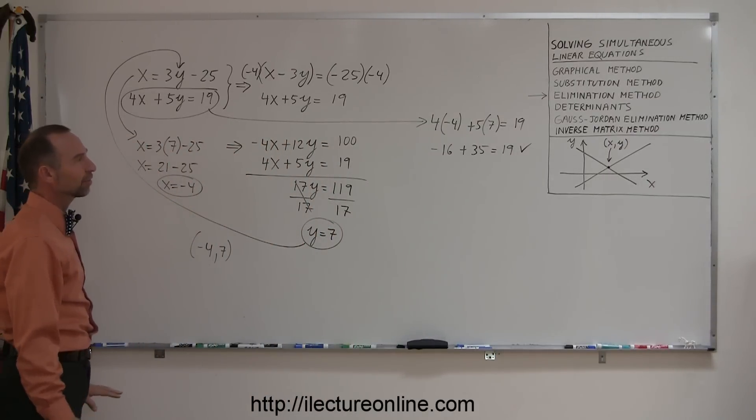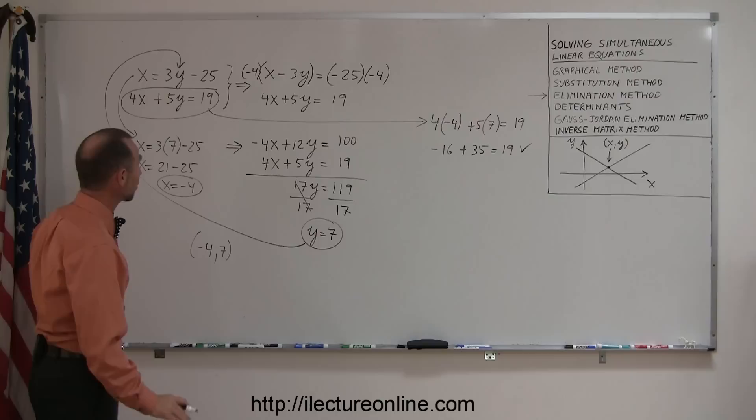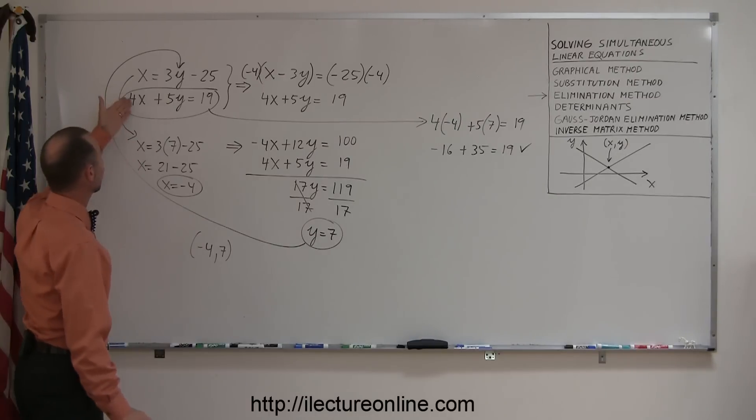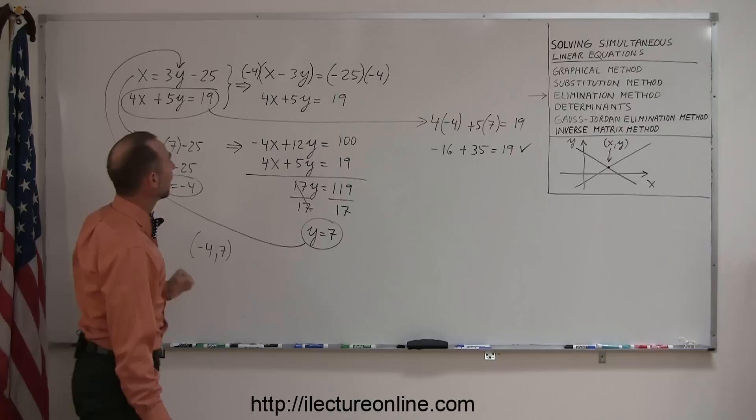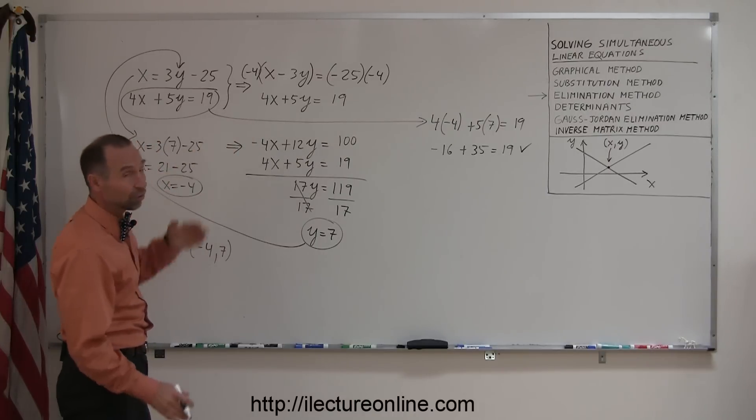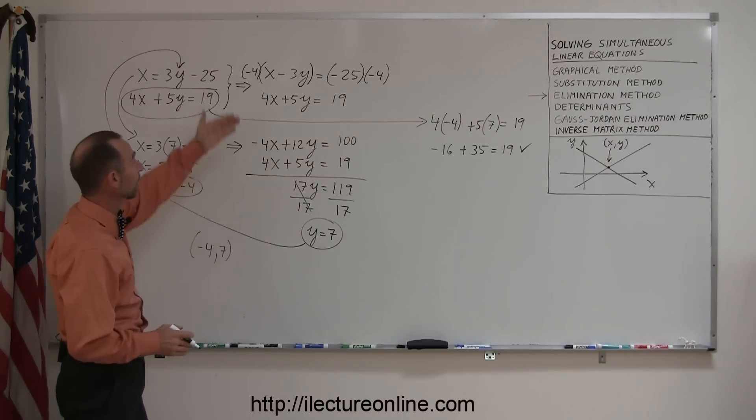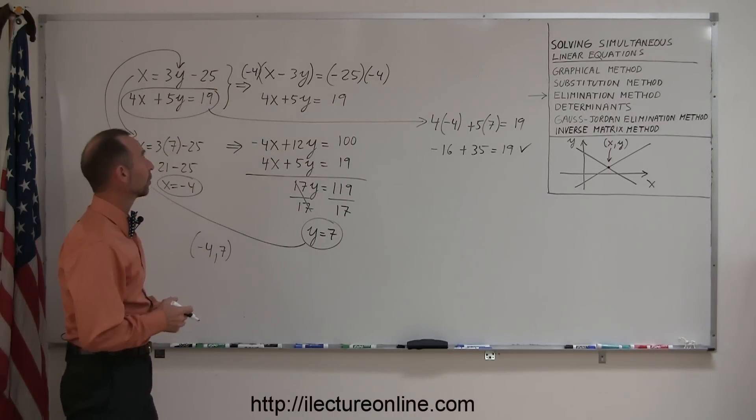So here you can see that the method of elimination is not always as straightforward. You first have to move the equations around so they have the same format. And then you have to multiply one or sometimes both equations by numbers so that when you add them together, one of the variables will drop out.